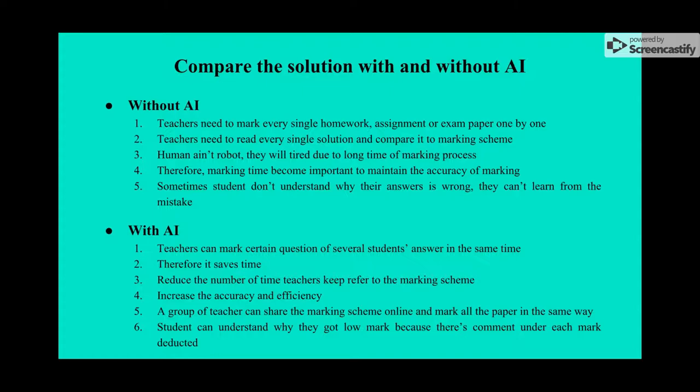With AI, teachers can mark certain questions for several students' answers at the same time, saving time and reducing how often teachers need to refer to the marking scheme. It increases accuracy and efficiency of marking. A group of teachers can share the marking scheme online and mark all papers consistently. Students can also understand why they got a low mark because there is a comment beside the rubric explaining the deducted marks.